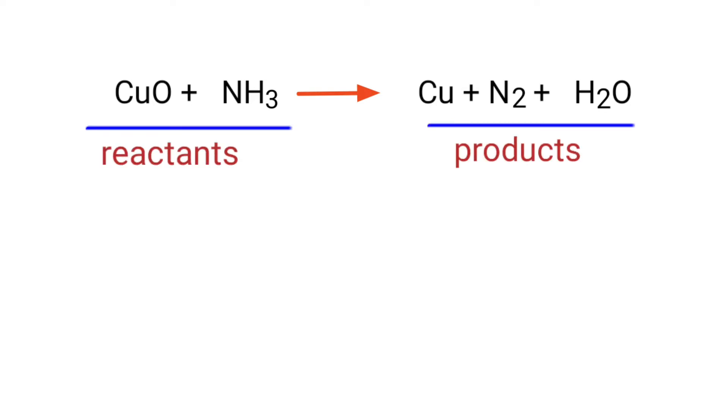In this equation, the reactants are Copper Oxide and Ammonia, and the products are Copper, Nitrogen, and Water.